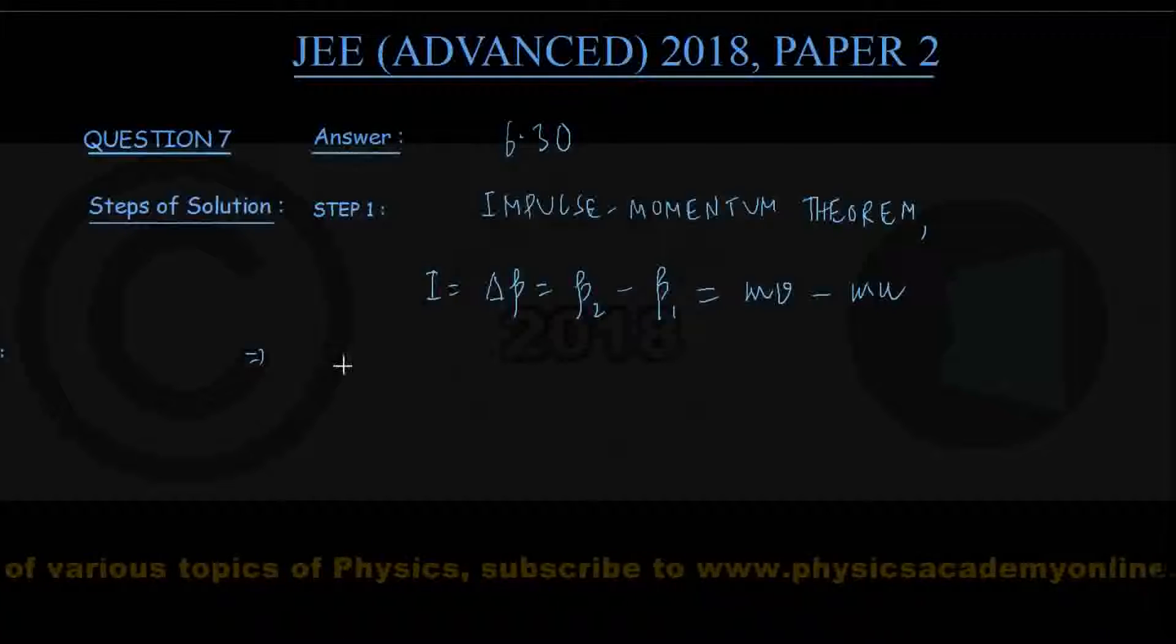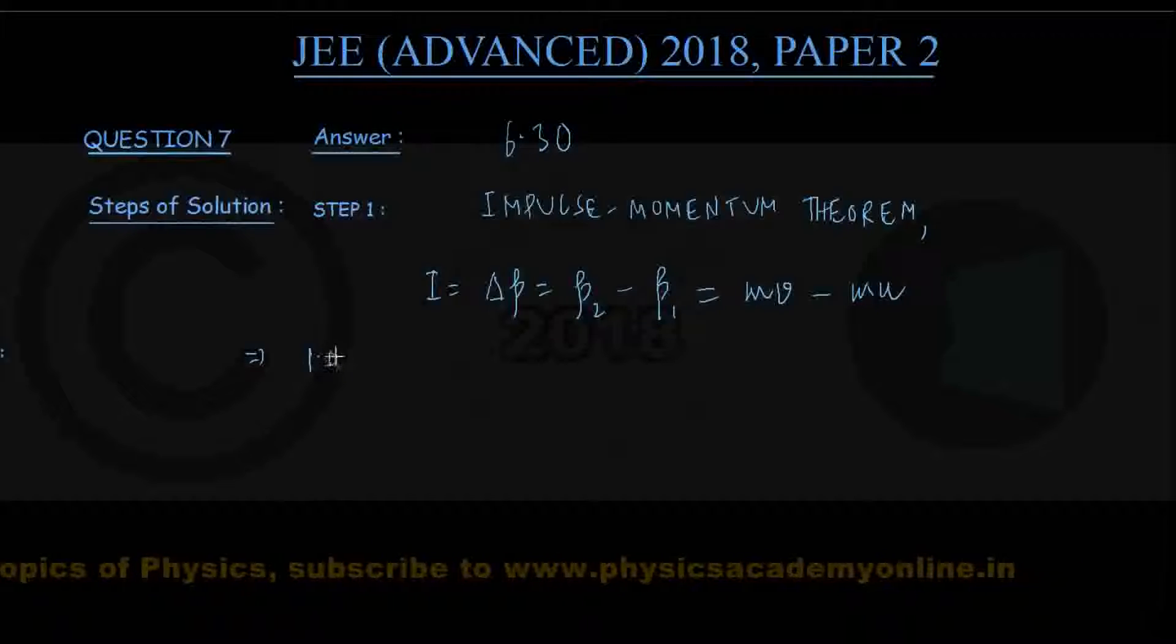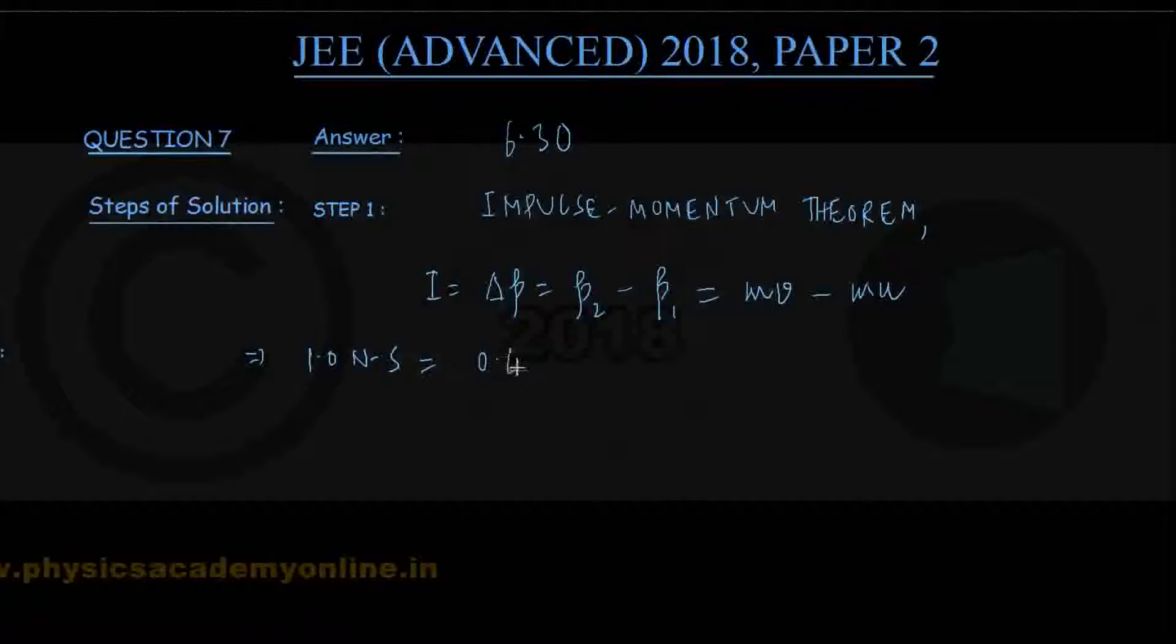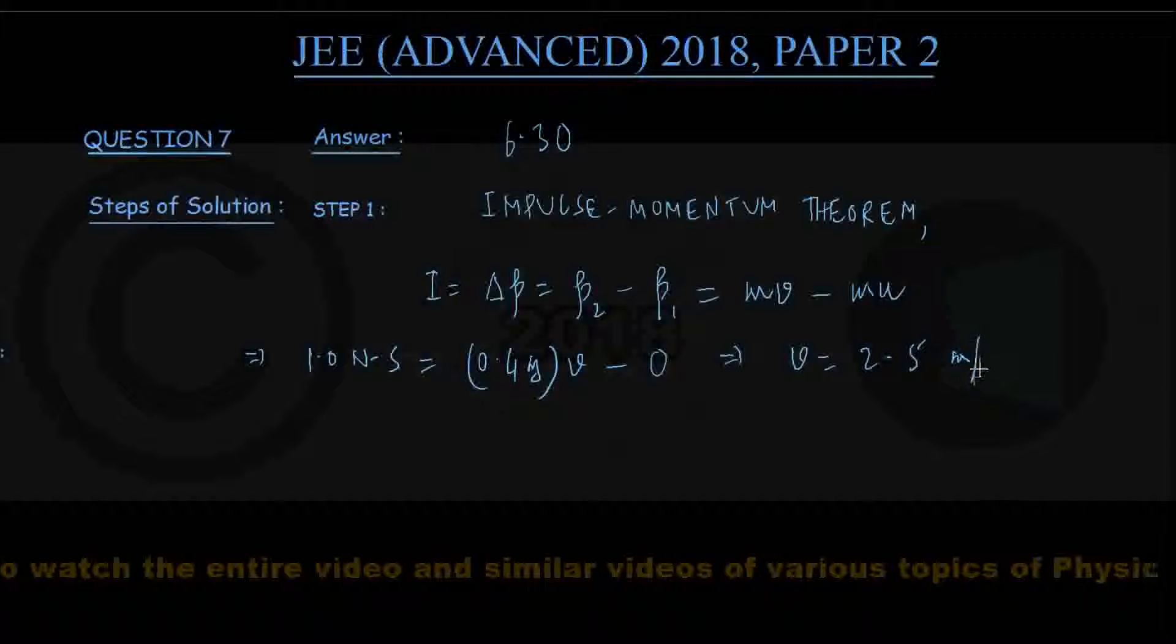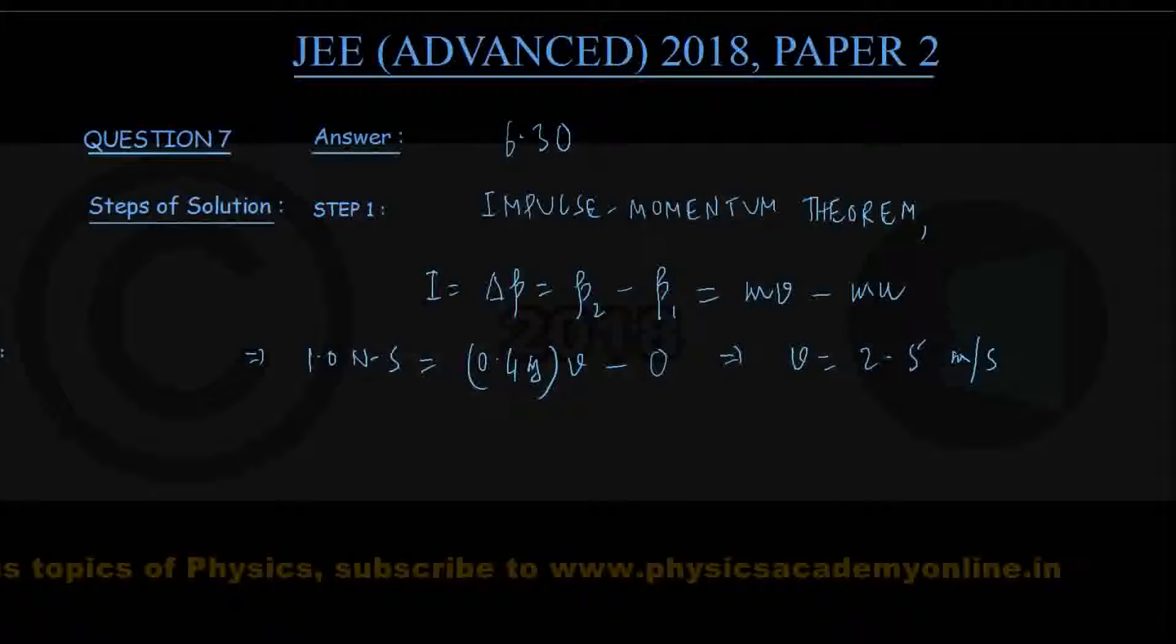Putting the data: I is given to be 1.0 newton second, equals mass 0.4 kg, v is unknown, and the second term mu vanishes because u is 0. So from here, when you solve, you find v to be 1 by 0.4, that is 2.5 meter per second. This is the speed acquired by the block just after the impulse, they have called it v0. That is step number 1.